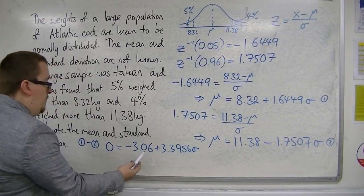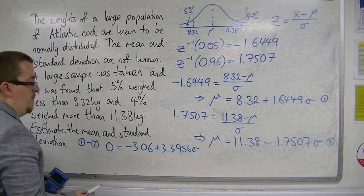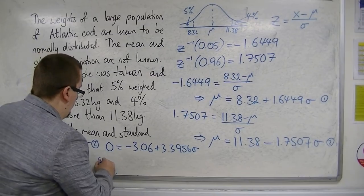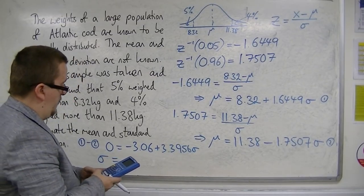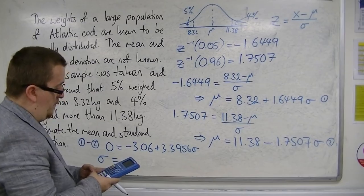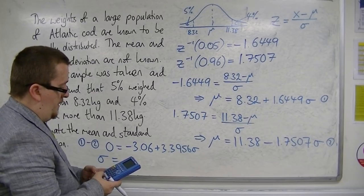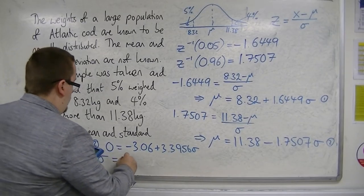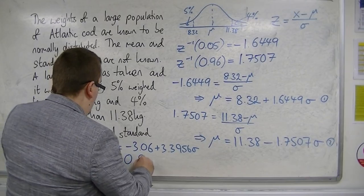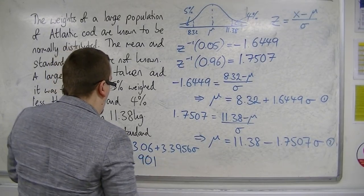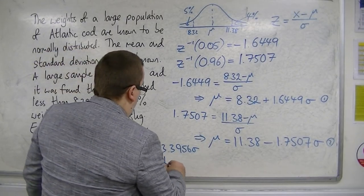So, if you add 3.06 to both sides and divide by 3.3956, so 3.06 divided by 3.3956 gets you 0.901 to three significant figures.